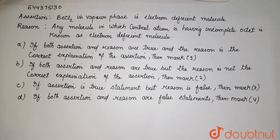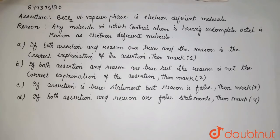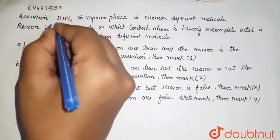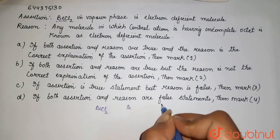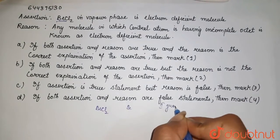Reason: Any molecule in which central atom is having incomplete octet is known as electron deficiency molecule. So here we are having BeCl2, that is your beryllium. It belongs to second group, that is your alkaline earth metal.